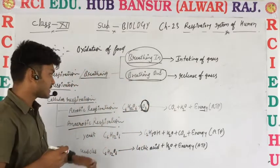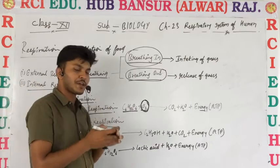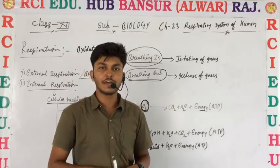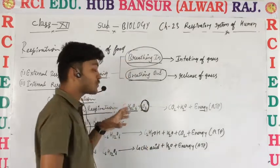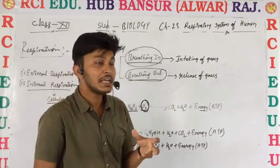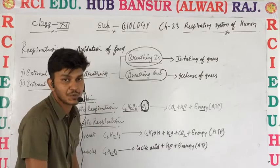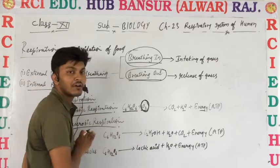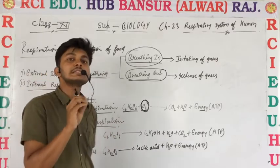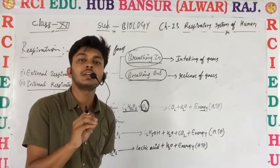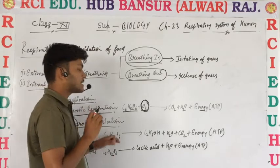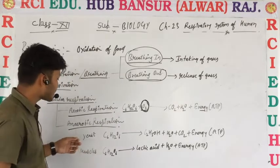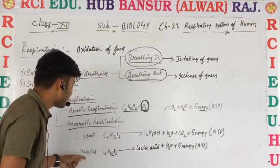Aerobic respiration is found in all living organisms — varieties of plants and animals all undergo aerobic respiration. Anaerobic respiration, on the other hand, is the process where glucose is directly converted into energy without any utilization of oxygen. There is no requirement for oxygen. According to the book, there are two examples: number one is yeast, and number two is muscles.